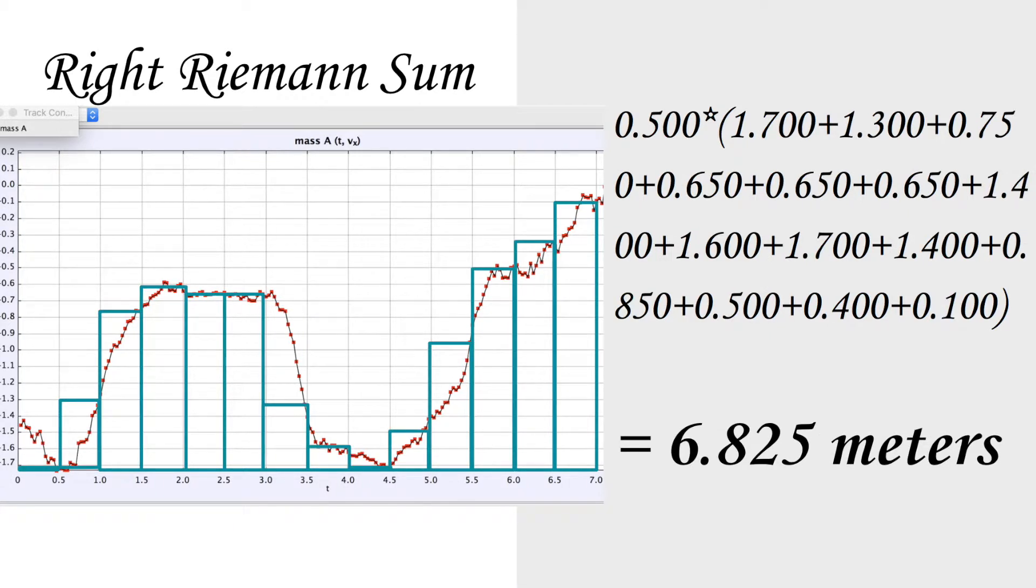Now, let's calculate the distance using right Riemann sum. For our right Riemann sums, we will still have 14 equal subintervals of 0.5 as our base, just like our left Riemann sum. The only difference is that now we will be taking the right coordinates of the rectangle.